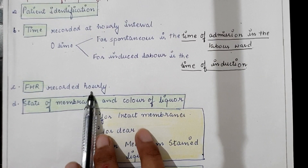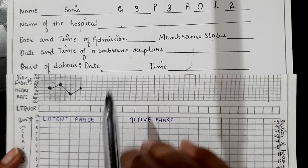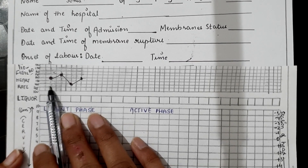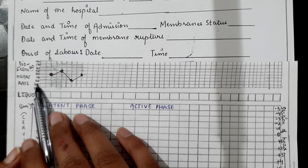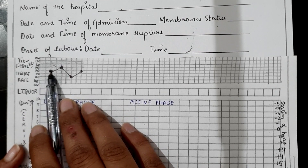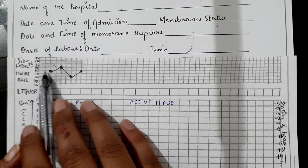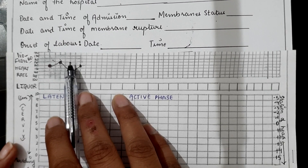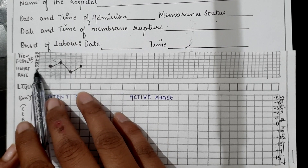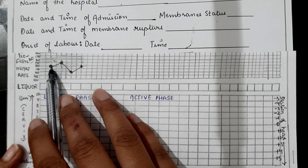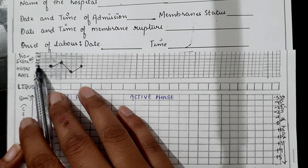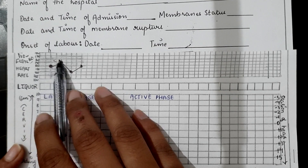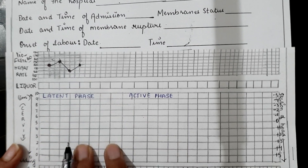Next is fetal heart rate, recorded early in the partograph next to the patient identification. Fetal heart rate should be recorded every hour. Mark a dot in front of the reading and join these dots with a line. For example, if during the first hour the fetal heart rate is 140, mark a dot at 140; during the second hour if it is 150, mark a dot at 150, and so on; then join these dots with a line.